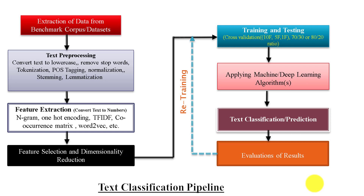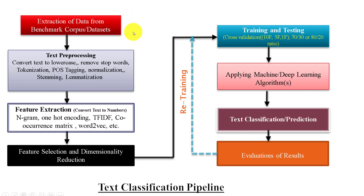This slide shows the complete pipeline of text classification. All those who are doing research in NLP or doing related work — this pipeline may be helpful for them. The first step in the pipeline is the extraction of data from benchmark corpus or datasets. This is the first step; here we have to provide data for analysis.